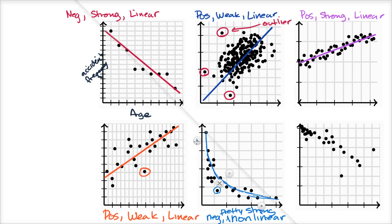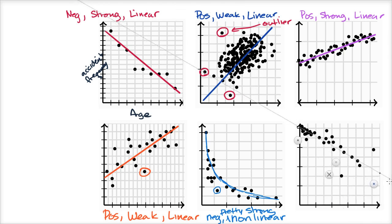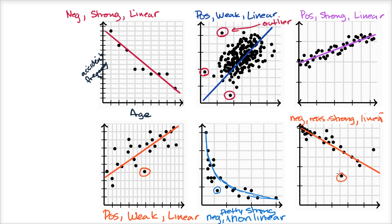Now let's do this last one. This one looks like a negative linear relationship to me — a fairly strong negative linear relationship, although there are some outliers. That line seems to fit the data pretty well. So this is a negative, reasonably strong linear relationship. But these are very clear outliers — these are well away from the cluster of where most of the points are. So with at least these two significant outliers here.